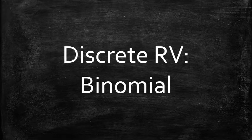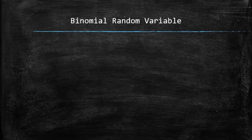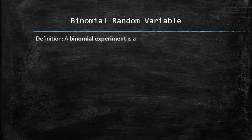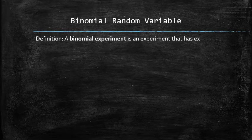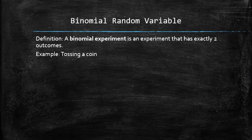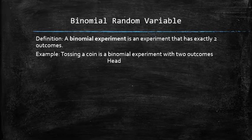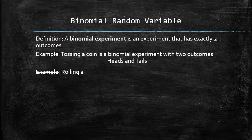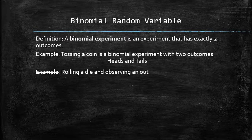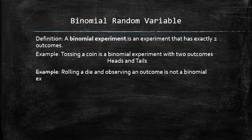Next, we will discuss a special type of discrete random variables called binomial. Let's start with the definition. A binomial experiment is an experiment that has exactly two outcomes. For example, tossing a coin is a binomial experiment with two outcomes: heads and tails. However, rolling a die and observing an outcome is not a binomial experiment because there are six possible outcomes.